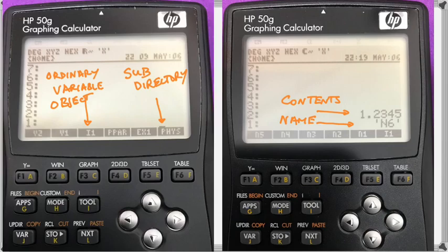So you can see your subdirectory a little more clearly there with the physics, where you can see the line over the P, and we can see the ordinary variable object.